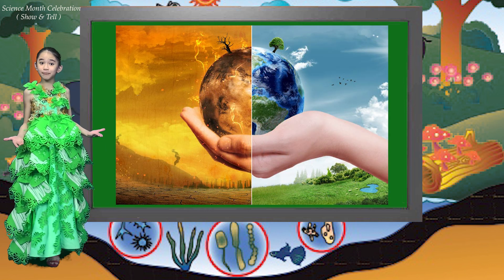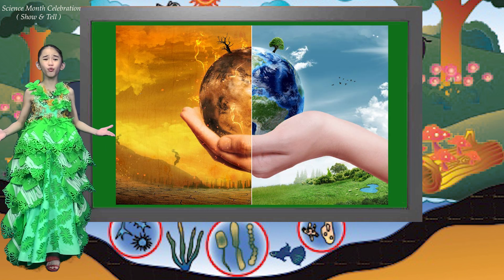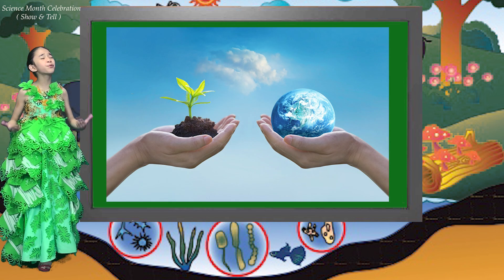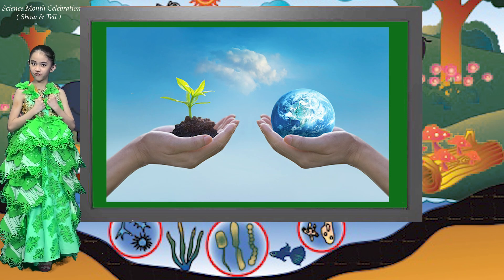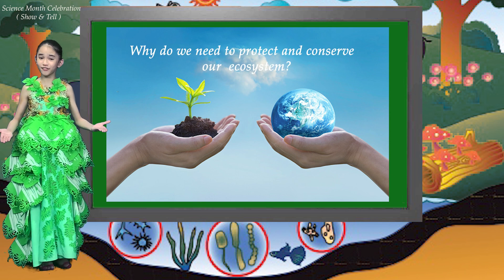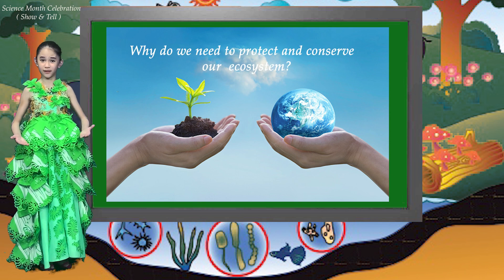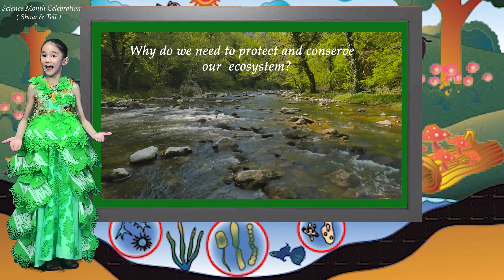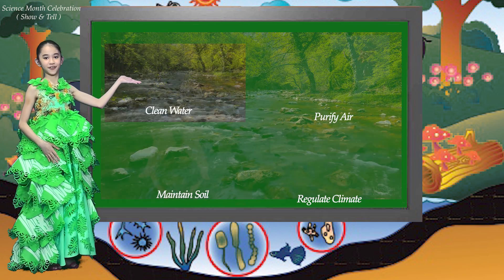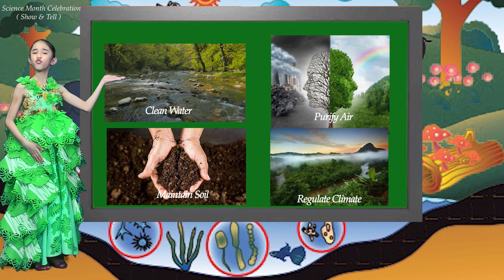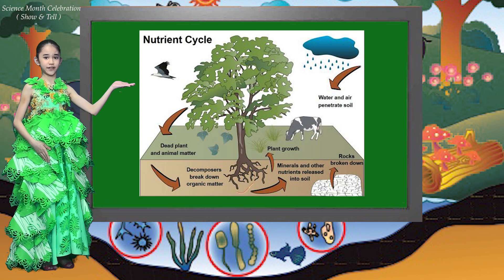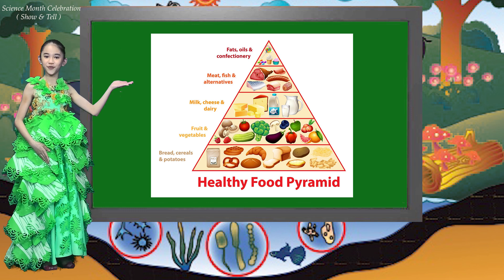We don't want this to happen. We don't want our future generations to suffer. Therefore, we need to protect and conserve our ecosystem. Why do we need to protect and conserve our ecosystem? Healthy ecosystems provide us clean water, purify our air, maintain soil, regulate climate, recycle nutrients, and provide us with food.